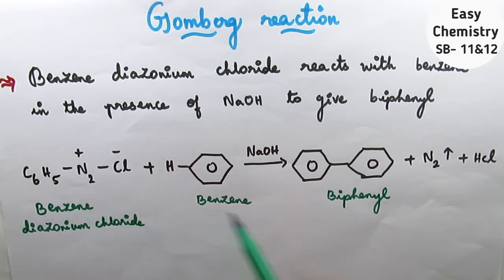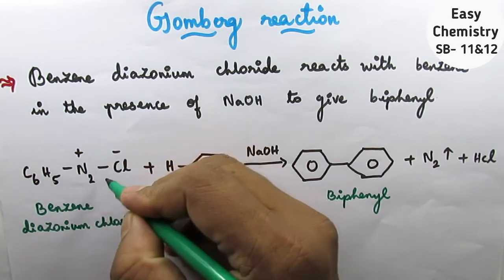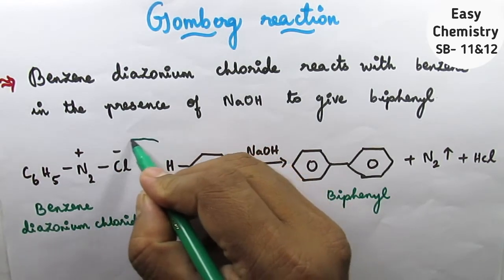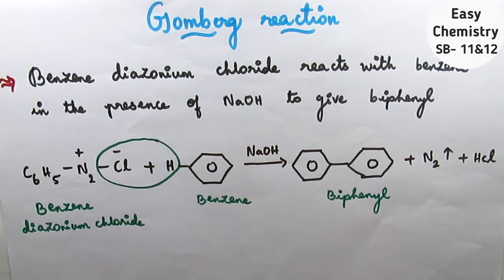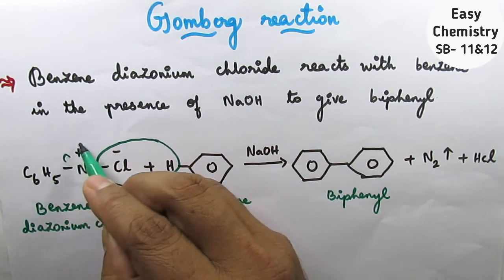In the benzene diazonium chloride, we look at the chemical properties involved. Bond breakup occurs - here is Cl-. Cl will leave as Cl- and combine with H to form HCl, which is neutral.